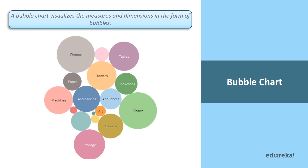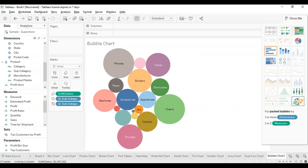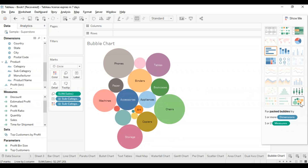Next and penultimate is the bubble chart. A bubble chart visualizes the measures and dimensions in the form of bubbles — it's kind of like the scatter plot but contributes to a more effective visualization. All I had to do is click on the packed bubbles option in show me, and it has created a bubble chart.